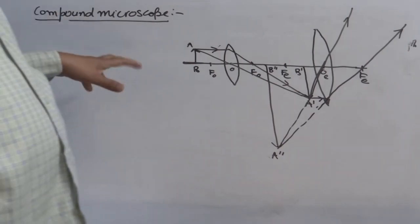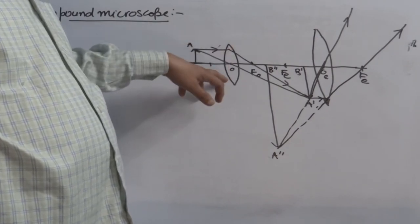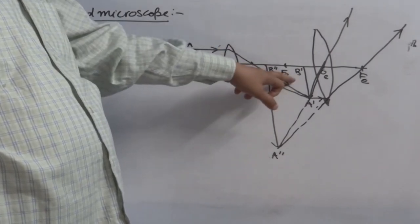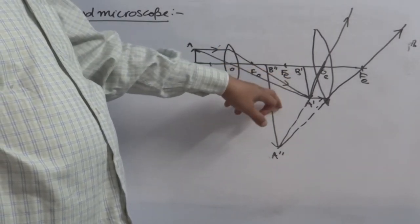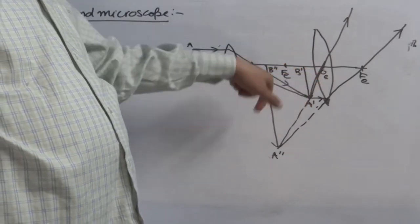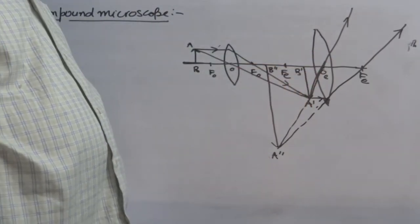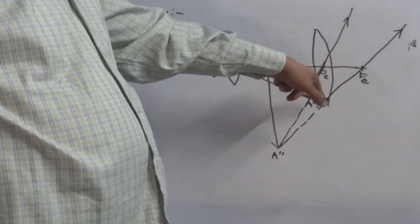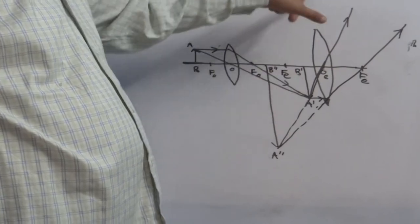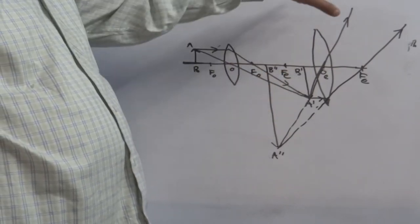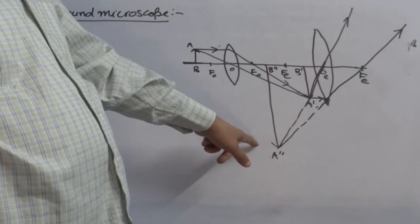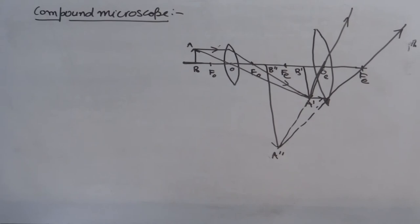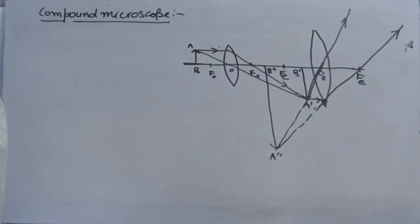To recap: a tiny object is kept in front of the objective lens, which has small focal length and small aperture. It forms an image at A'B'. This A'B' then serves as an object for the eyepiece lens. Following the rules of image formation — one ray through the focus, another through the optical center — they don't meet and must be extended back to obtain the final image A''B''. That is how image magnification works in a compound microscope.